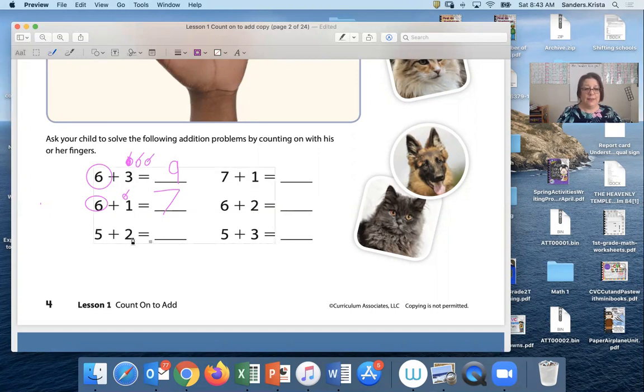Now we're gonna do 5 and 2. Which number is greater? 5 or 2? 5 is greater. So how many circles am I gonna put above the 2? Two, one, two. All right, let's put 5 in our hand. Here we go. 5, 6, 7.